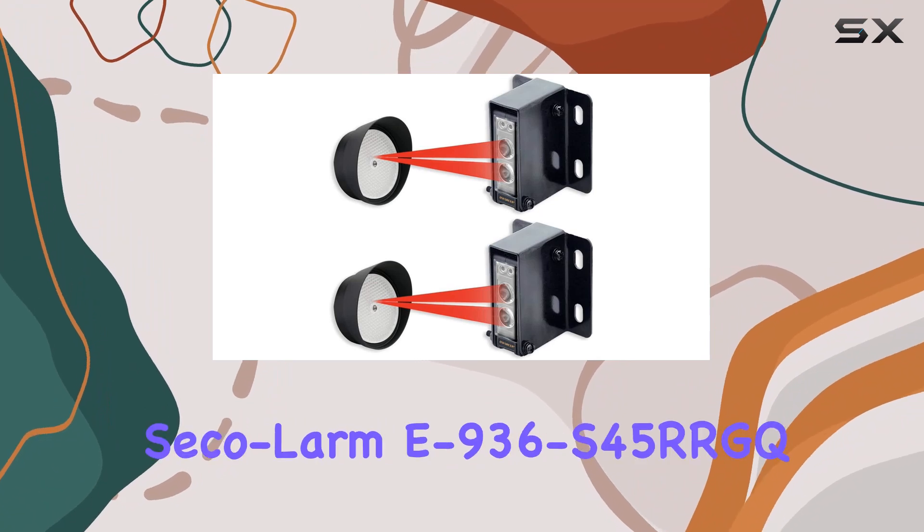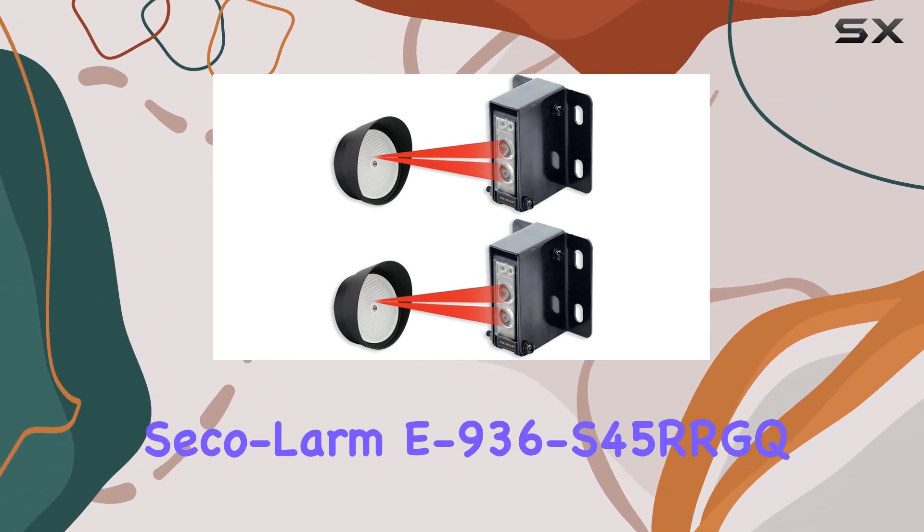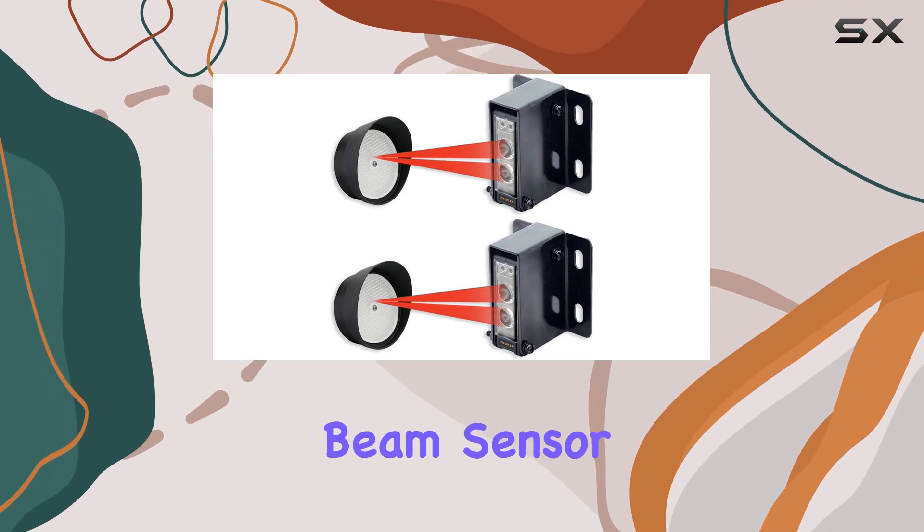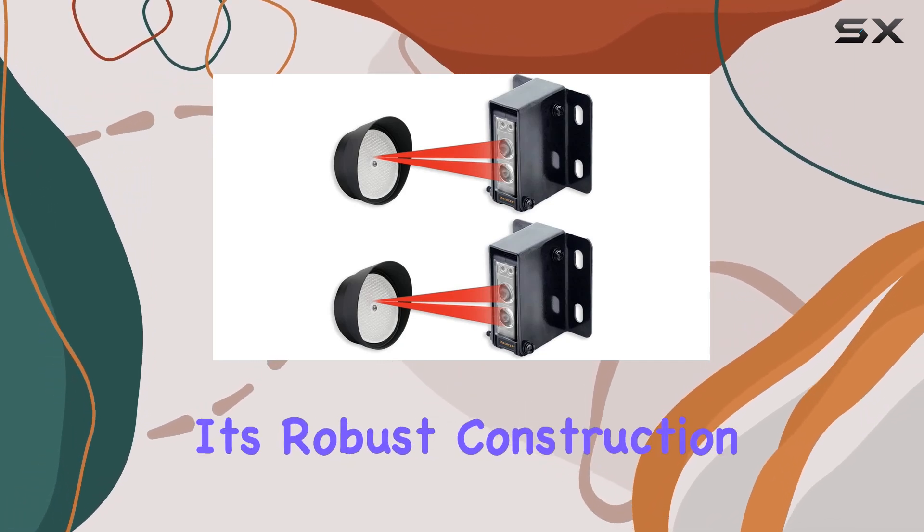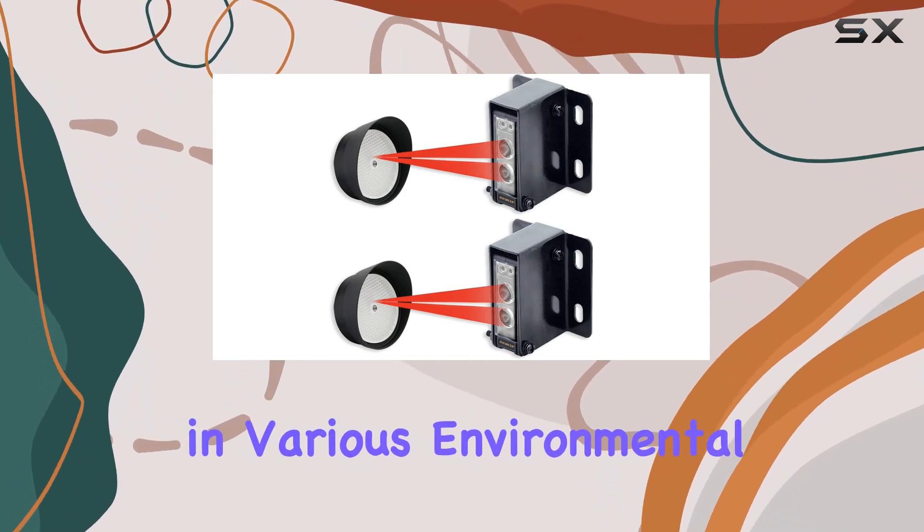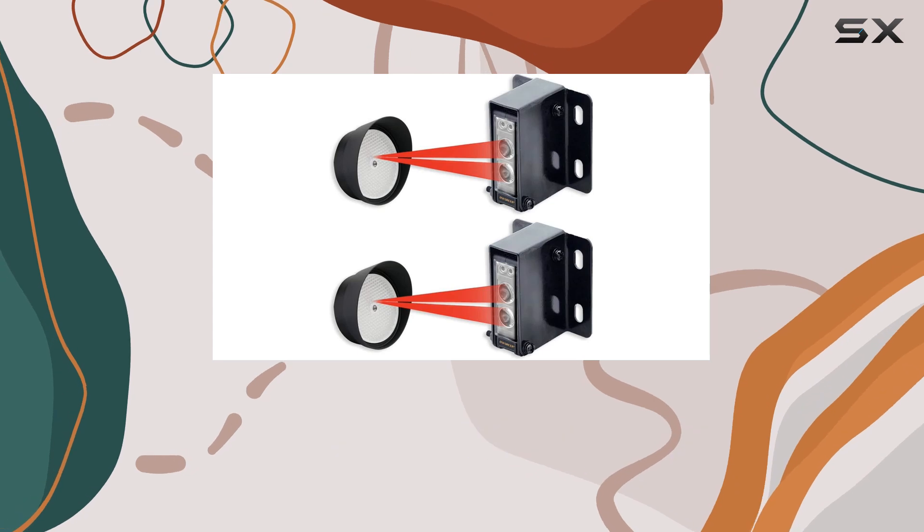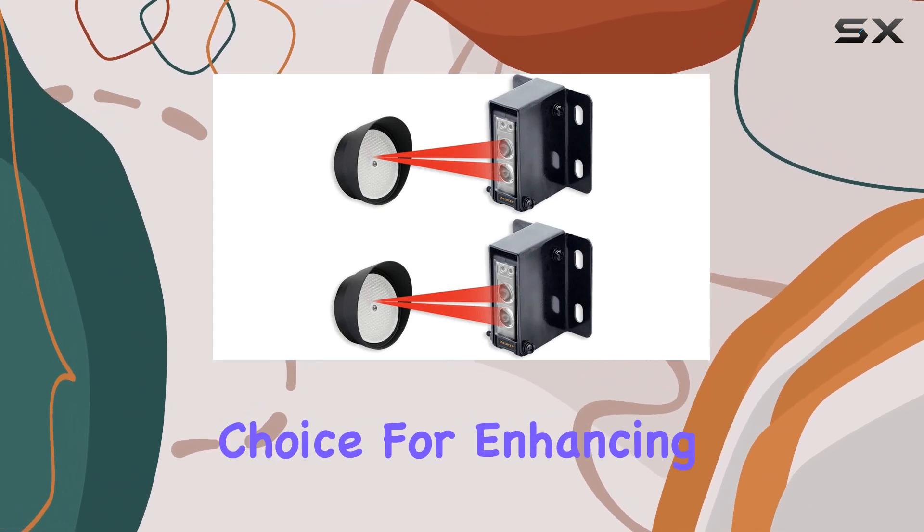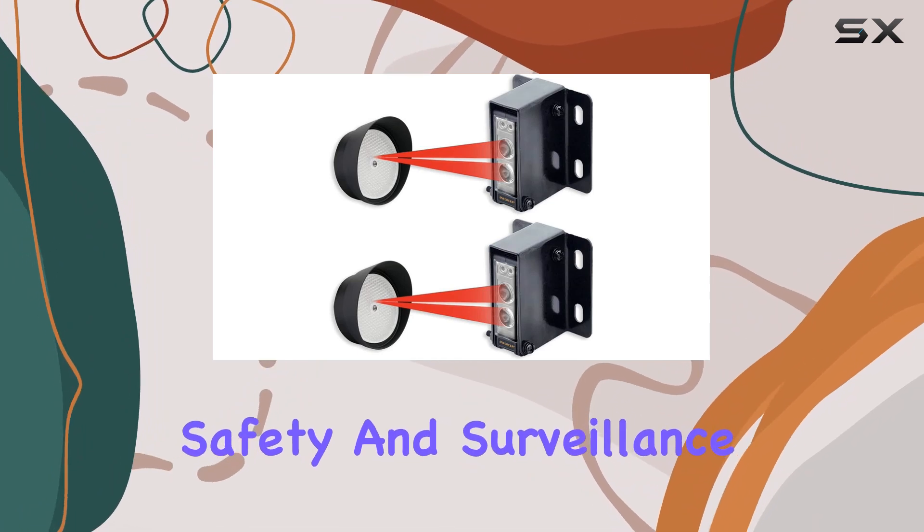Overall, the Sec Alarm E936 S45 RRGQ Retro Reflective Photoelectric Beam Sensor impresses with its robust construction, adjustable features, and reliable performance in various environmental conditions. Whether you're upgrading an existing security setup or starting anew, this sensor proves to be a dependable choice for enhancing safety and surveillance.